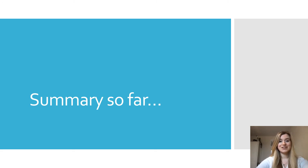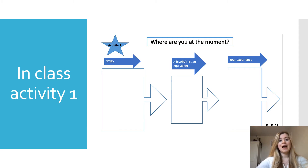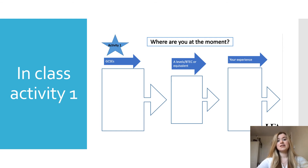Now we will start our first in-class activity. Take a couple of minutes to jot down what GCSEs you have and what grades you've attained or been predicted, and identify any GCSEs you may need to retake to meet entry requirements. Then write down the A-levels or equivalent qualifications you have and your predicted grades. This helps you identify where you need to work harder to achieve the entry requirements for the medical schools you want to apply to. Also jot down any experience you have so far — a part-time job, volunteering, hobbies — as these can act as a prompt when you come to write your personal statement.